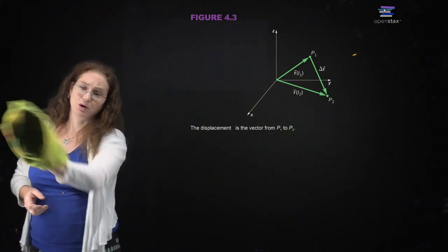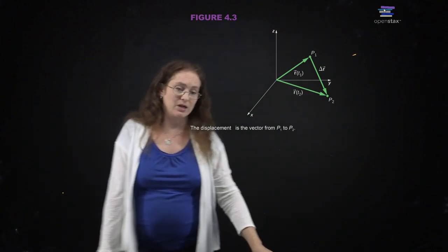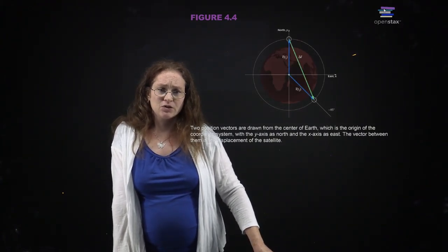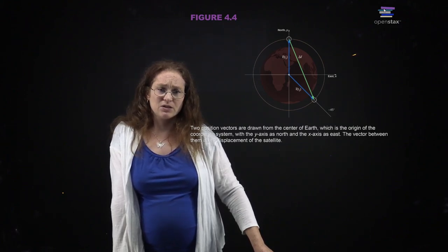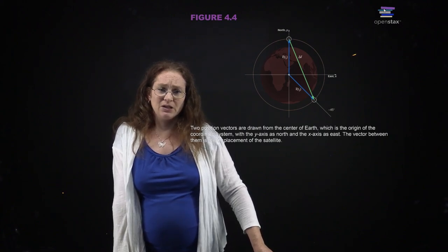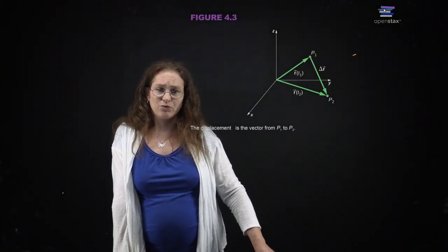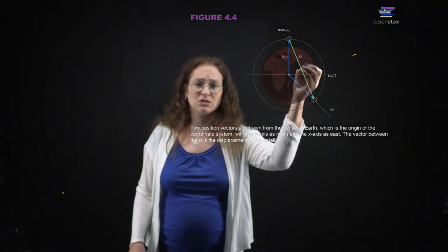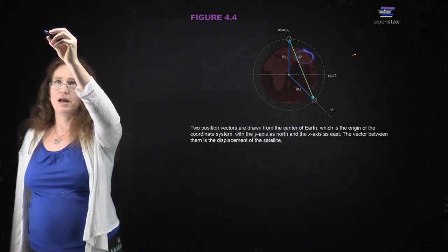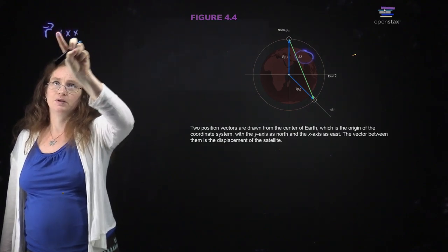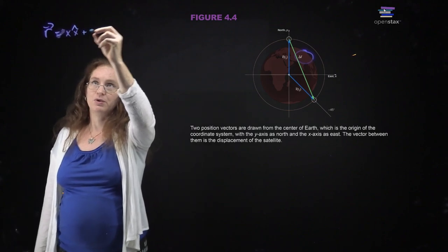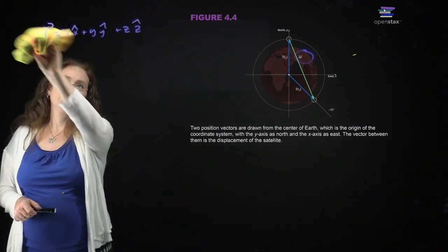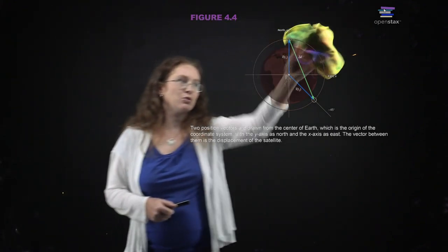Later, when you get to a more advanced mechanics class, you'll really have to work those physics muscles much harder. Here, these are two position vectors from the center of the earth. The position vector r is X times X-hat plus Y times Y-hat plus Z times Z-hat. If you want the displacement between two different points, you just subtract the vectors.